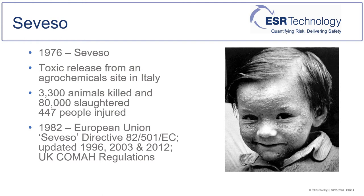The incident at the ICMESA works at Seveso followed an interruption to production, a loss of cooling, and a runaway reaction. This resulted in a bursting disk relieving pressure to atmosphere, releasing an estimated 30 kilograms of toxic material. This led to injuries to 447 people and a major environmental impact, the aftermath of which is still being dealt with today.